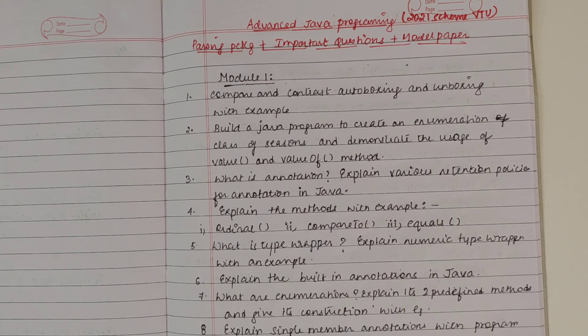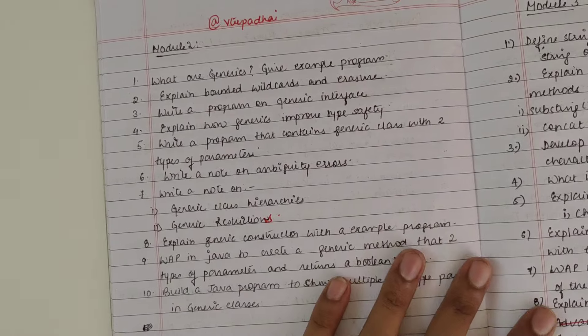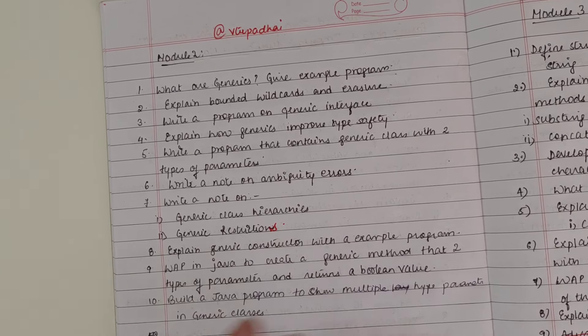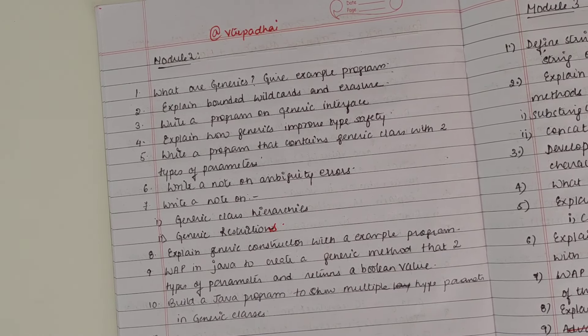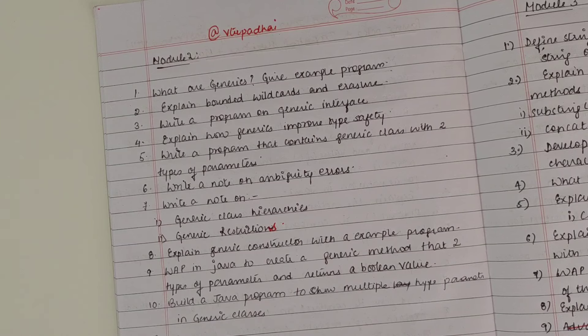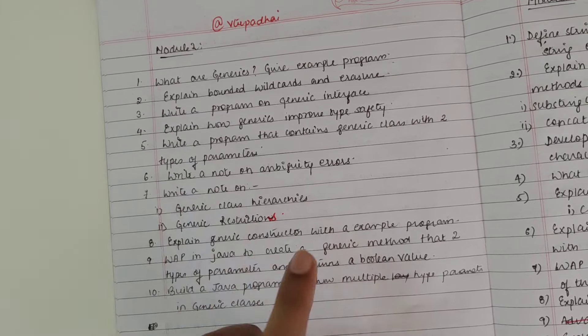Advanced Java Programming was there from 2015 scheme onwards with the same syllabus except Module 2. Module 2 has Generics. I would suggest you refer the question papers from 15 scheme onwards because going before that will introduce new topics, so please don't get demotivated.